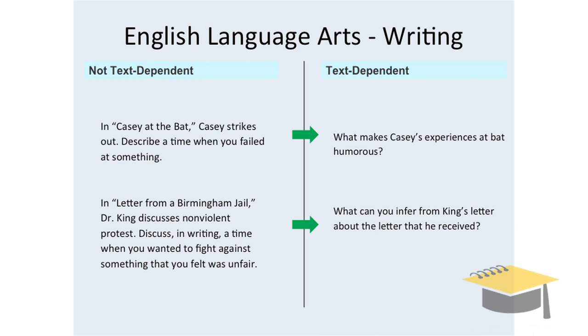Here are some other kinds of items. On the left, you'll see items that ask students to talk about their personal experiences or personal opinions. That's fine, but it's not text dependent. On the right, you'll see different kinds of items where kids actually read — what makes Casey's experiences at bat humorous after they've read that passage, and what can you infer from King's letter about the letter he received while in Birmingham jail? Two very different kinds of questions that ask you to read something, write about it, back up your responses, and actually think — as a former English teacher, that's the kind of item I would have wanted my kids to do. It's really powerful when you think about the skills that gives a kid.